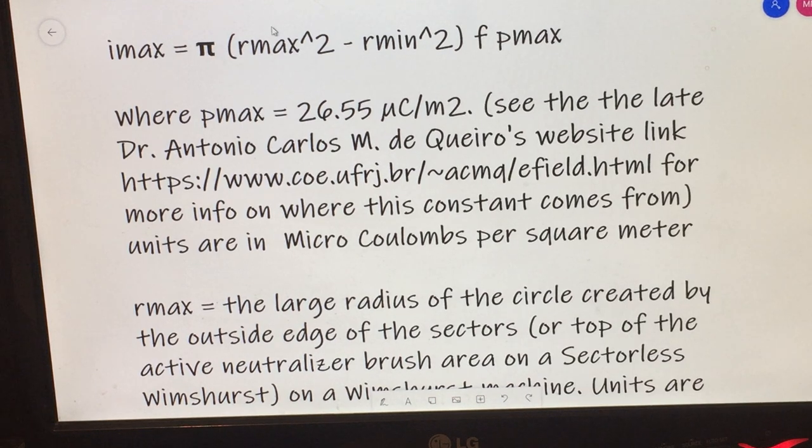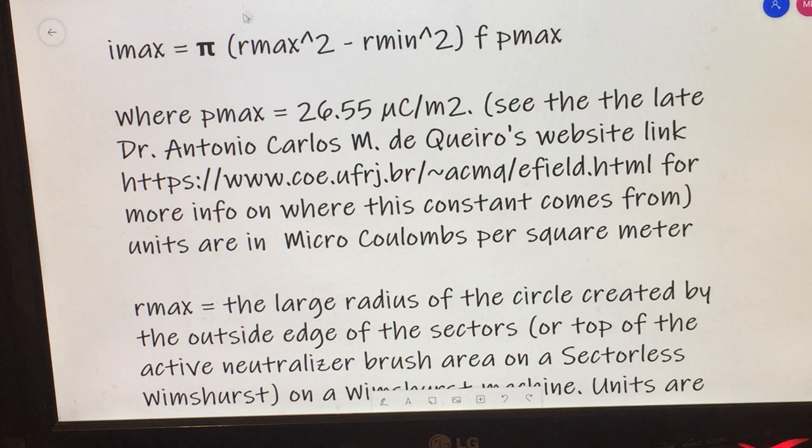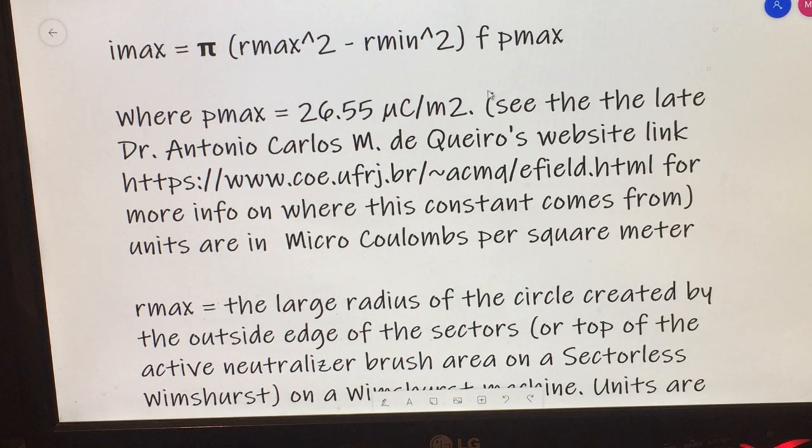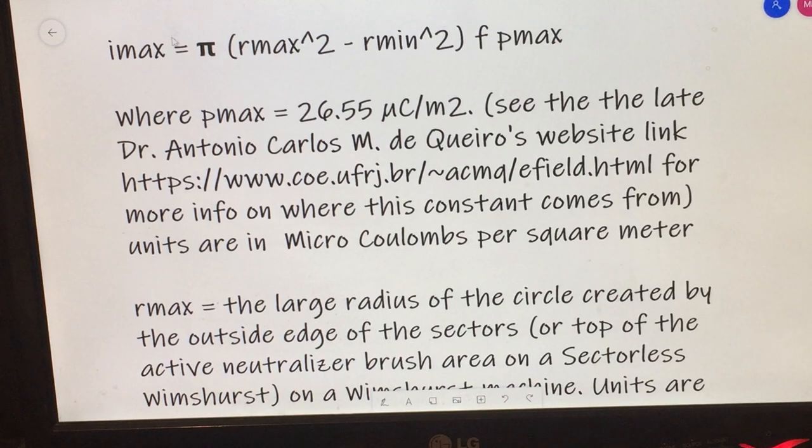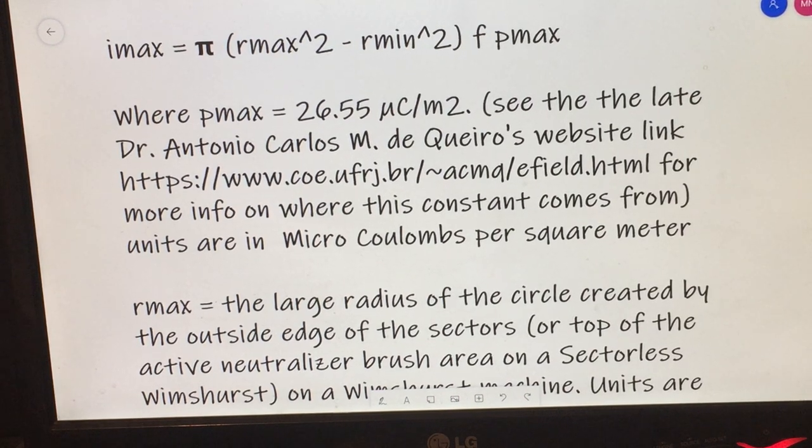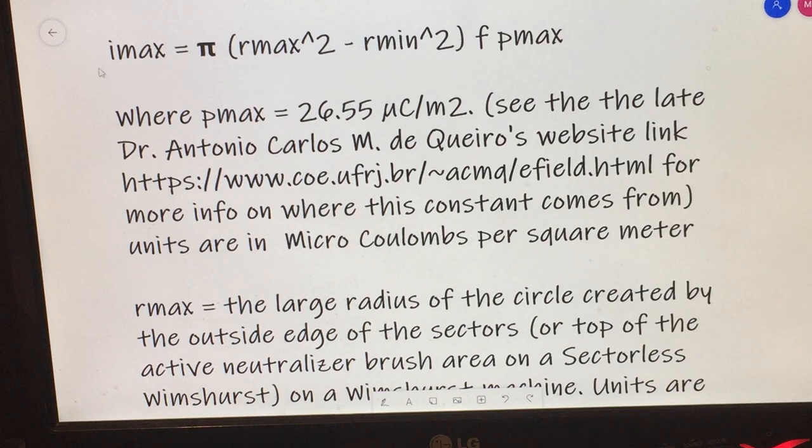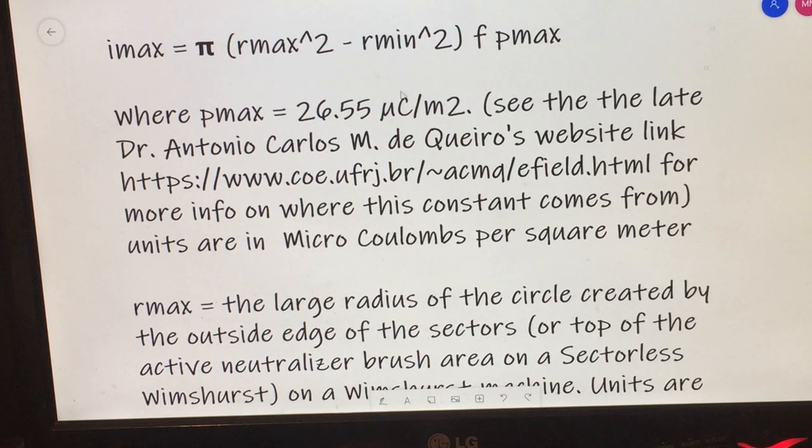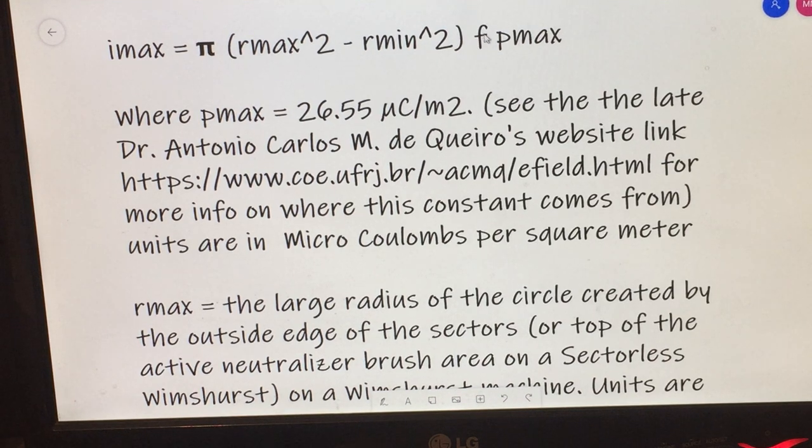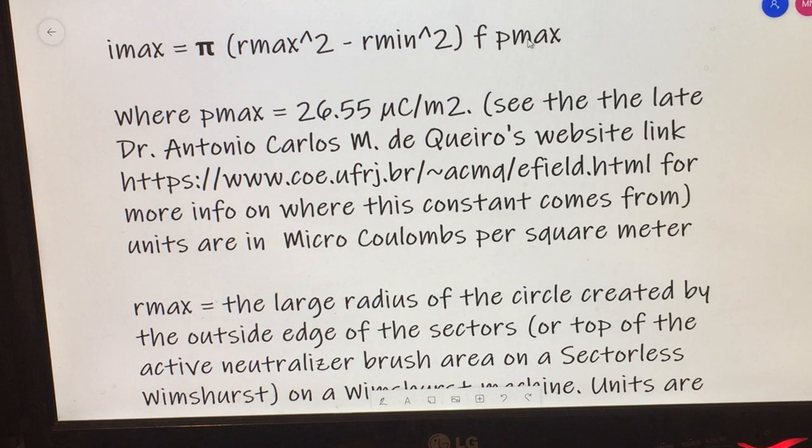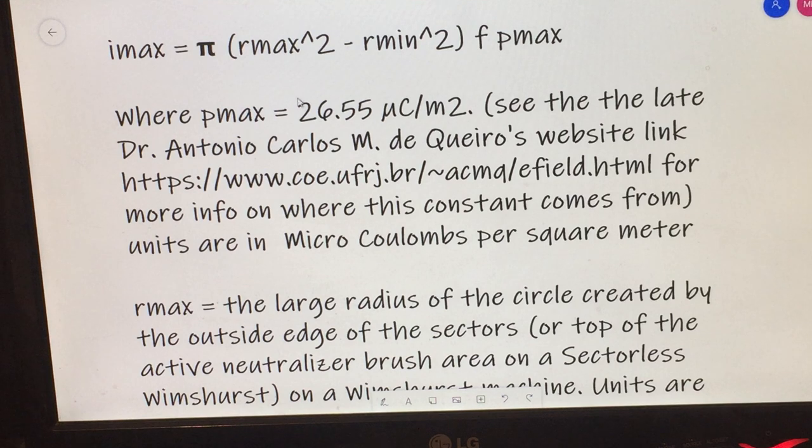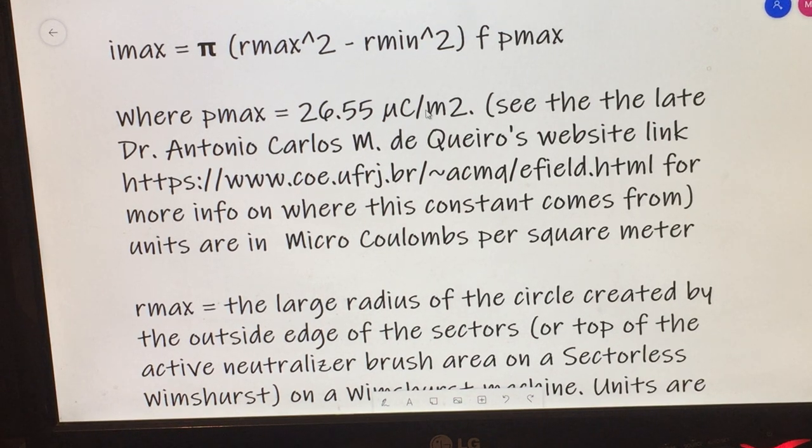So you basically want, you're basically taking the two circles that define the maximum circle and the minimum circle, subtracting them and you get a charge ring. That's the active area of your machine. Again, flat machines, it'll be just a length times width calculation, cylindrical machines, the area of the surface of a cylinder. And of course, you're talking about the active area that you're using if you're not using the entire surface area. F again is frequency of the machine in terms of revolutions per second, not revolutions per minute. And again, P-Max is this 26.55 microcoulombs per meter squared.